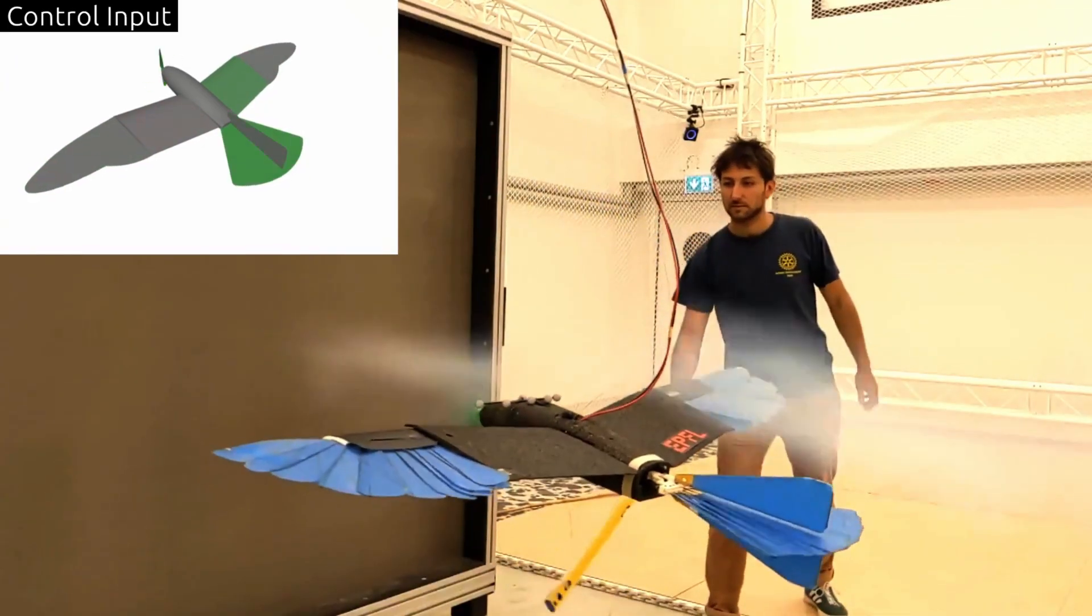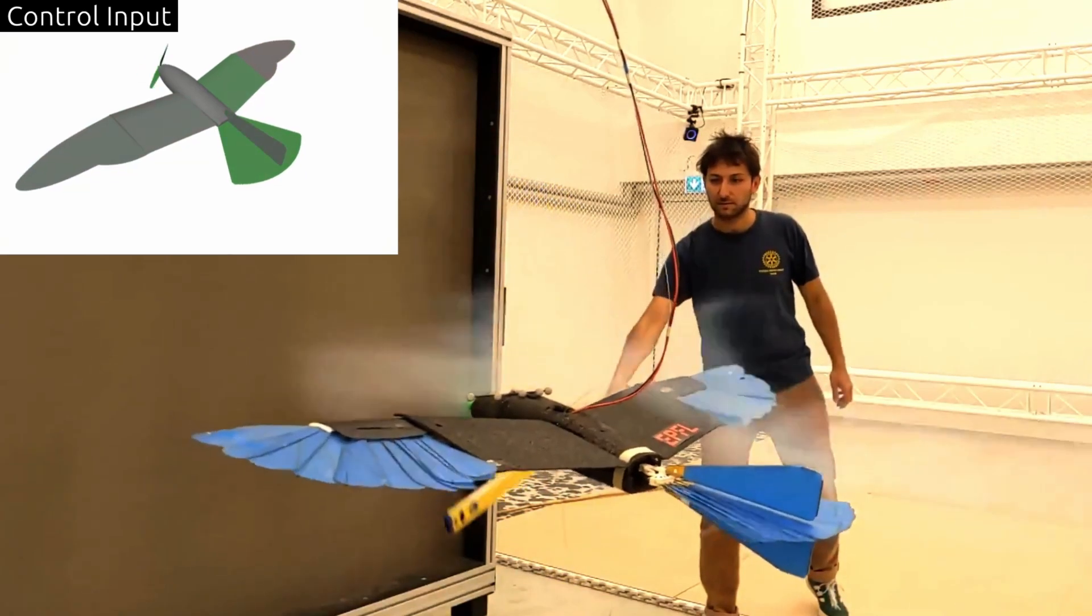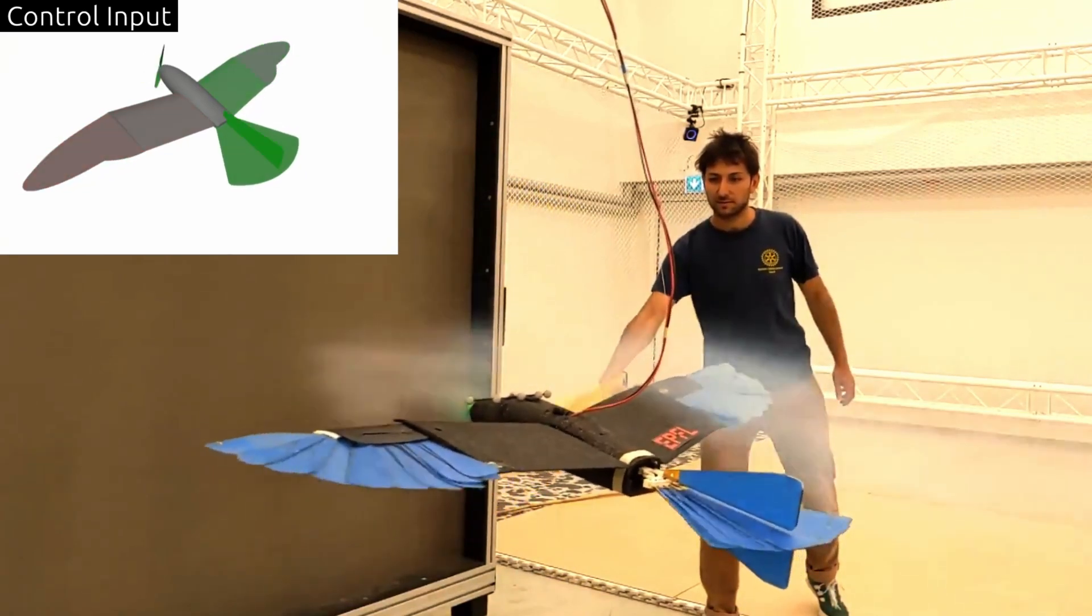Similar to real birds, the drone uses all of its degrees of freedom to maintain steady flight in turbulent airflow.